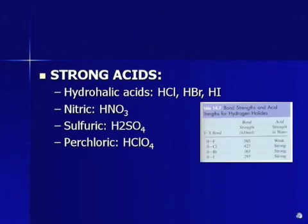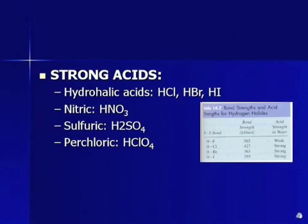Strong acids — you pretty much have to memorize these; you're not going to be given this as a source of information. The three halic acids use the halogens Cl, Br, and I — no F, because F is a weak acid. Then nitric, HNO3; sulfuric, H2SO4; and perchloric, HClO4. These are your six main strong acids.